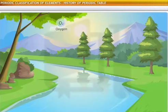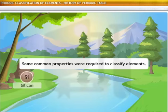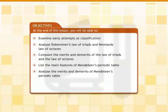Similarly, there are over a hundred elements known to us. Scientists felt the need to classify them on the basis of some common properties. In this lesson, we will learn how the attempts to classify elements led to the evolution of the periodic classification of elements.